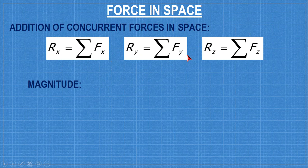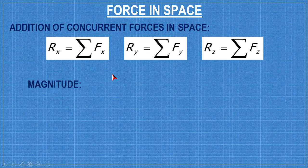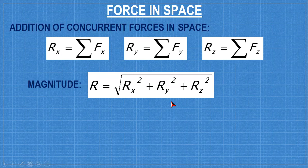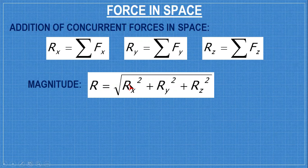So once you have the components Rx, Ry, and Rz, you can get the magnitude by this one. Same with the single force, if you have the components of the force, this is the formula to get the magnitude. And it is applied also to the resultant force. So, square root of Rx squared plus Ry squared plus Rz squared.